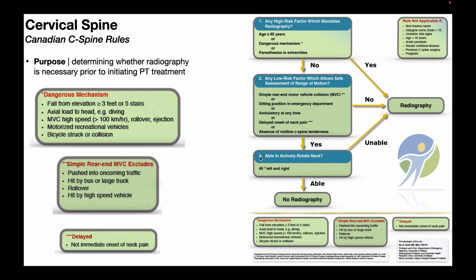Question three is very simple: Is the person able to actively rotate their neck at least 45 degrees in both directions? Have the person perform cervical rotation to the left — do they reach 45 degrees? Then have them rotate to the right — do they reach at least 45 degrees? If they can do both, then no radiography is necessary and the person may initiate PT treatment. If the person is unable to actively rotate their neck at least 45 degrees in each direction, that necessitates radiography prior to initiating PT treatment.